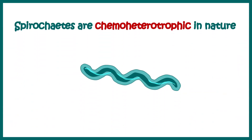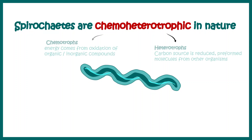From a nutritional point of view, spirochetes are chemo-heterotrophic in nature, meaning they use organic carbon as a carbon source and they use energy which comes from oxidation of organic or inorganic substances.